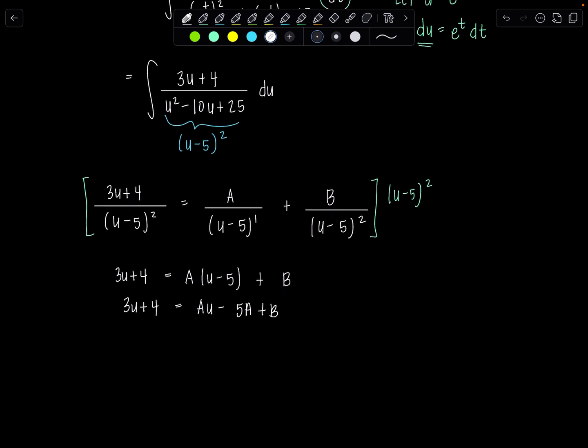So setting coefficients of like terms equal to each other, let's start with u to the first. I have 3u to the first on the left and I only have Au to the first on the right, so A has to be 3.